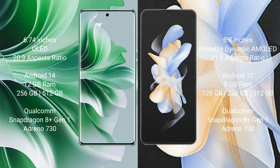Oppo Reno 11 Pro comes with 12GB RAM and 256GB or 512GB internal storage, with a Qualcomm Snapdragon 801 processor 8GP and Dino 730. Samsung Galaxy Z Flip 4 comes with 8GB RAM and 128GB, 256GB, or 512GB internal storage, with a Qualcomm Snapdragon 801 processor 8GP and Dino 730.